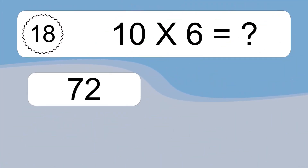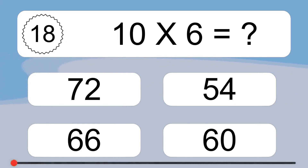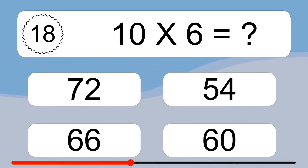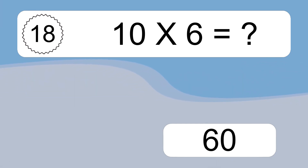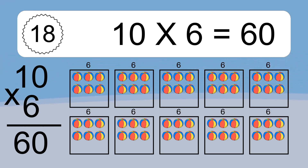Ten times six equals what? Ten times six equals 60. We have ten boxes and each box has six colorful balls inside. If you count all the balls in all the boxes together, you will have ten times six balls. This equals 60 balls.